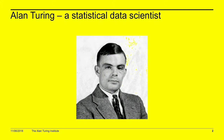Turing at Bletchley Park constructed a multidisciplinary team: he brought in cryptographers, language experts, and the equivalent of computer scientists, and crucially he appreciated the value of statistics and brought in Jack Good as his key statistician. Through statistical data science, Turing was actually able to break the Enigma code, and I'm going to walk you through some of that work and bring it right up to modern day.